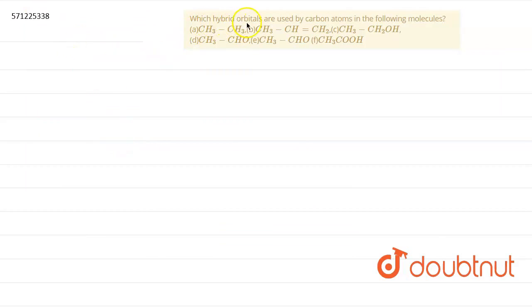Hello, the question is, which hybrid orbitals are used by the carbon atom in the following molecule? Okay, in the first case, we are given CH3-CH3.